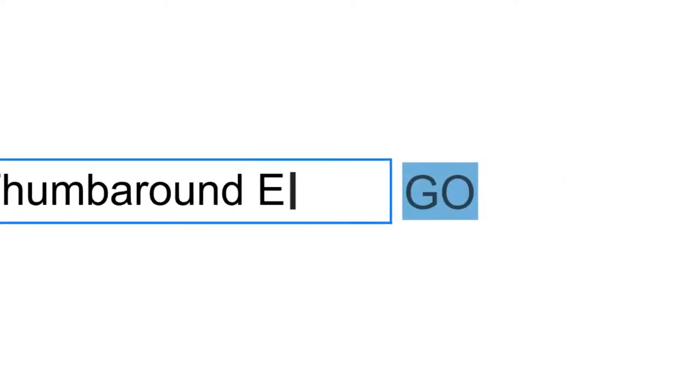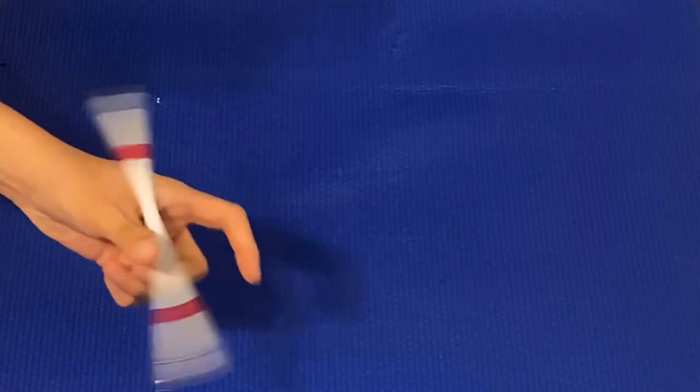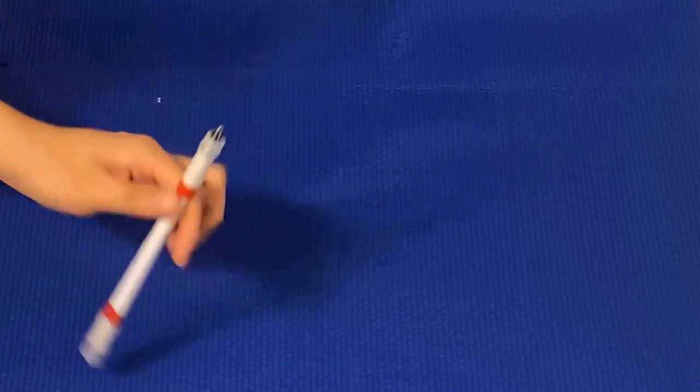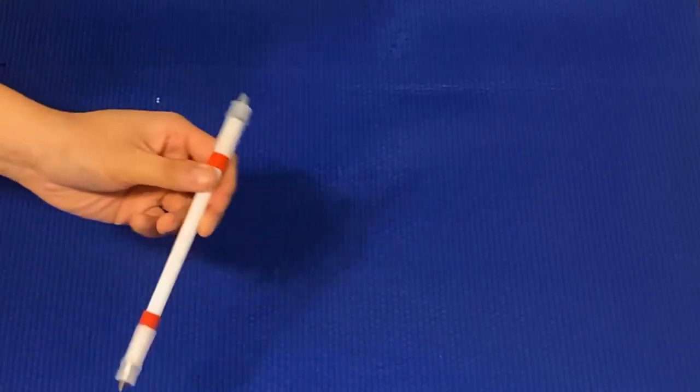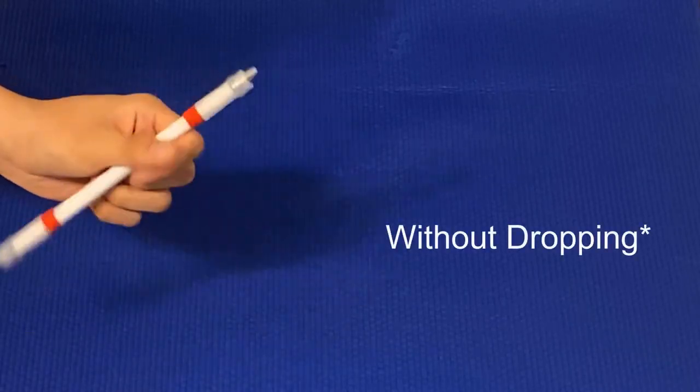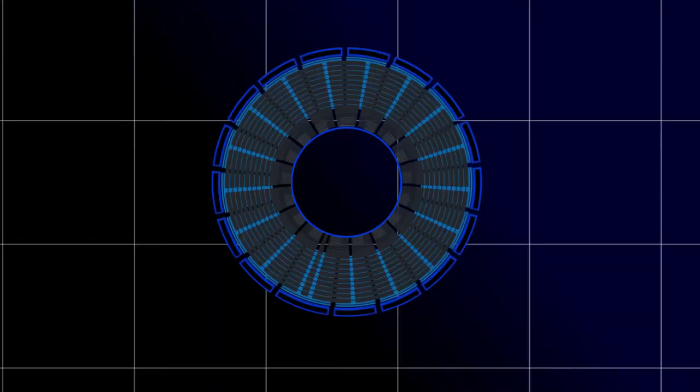Hey yo interneters, welcome back to another video. Today we're going to learn how to do the thumb around extend. Before we get into the video, I want to mention there is a prerequisite to do this trick, and that prerequisite is being able to do the thumb around. Preferably you want to be able to do the thumb around 90 to 95 percent of the time. With that being said, let's get right into the video.